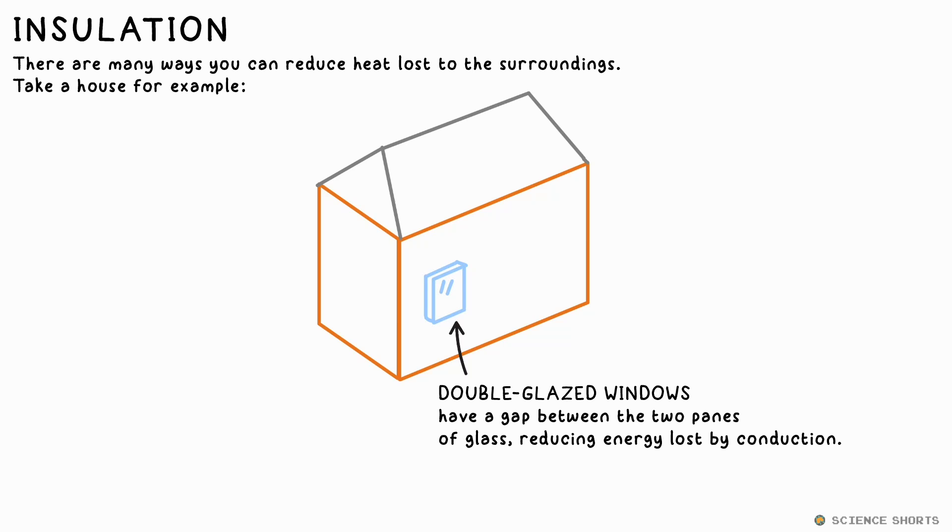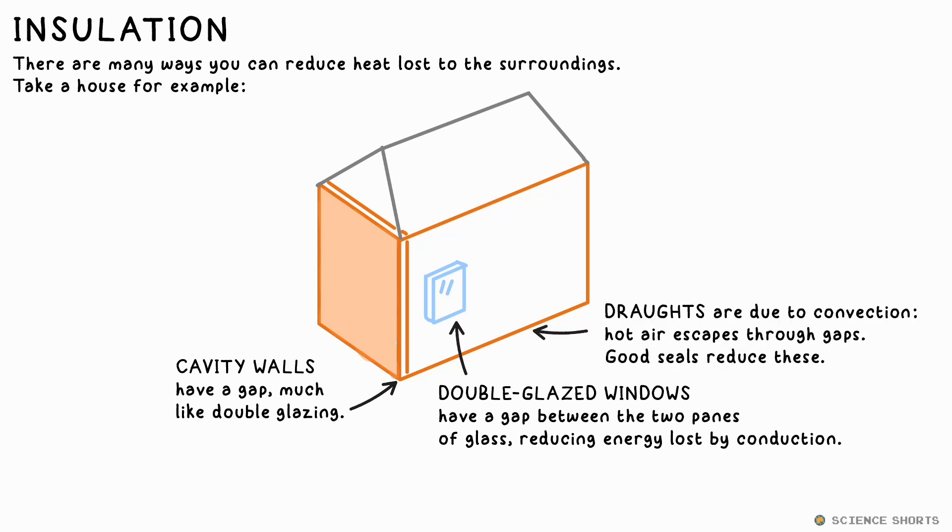Ideally, this will be a vacuum between. Cavity walls work in a similar way. Heat can be lost due to convection thanks to any gaps in doors and windows, which you'll want to block so hotter air can't get out and colder air can't get in.